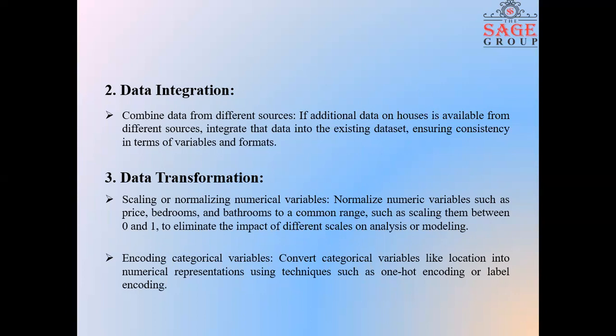Next step is data transformation. You can scale or normalize numerical variables. Normalize numerical variables such as price, bedrooms and bathrooms to a common range, such as scaling them between 0 and 1 to eliminate the impact of different scales on analysis or modeling. This step also involves encoding categorical variables. You can convert categorical variables like location into numerical representation using techniques such as one-hot encoding or label encoding.